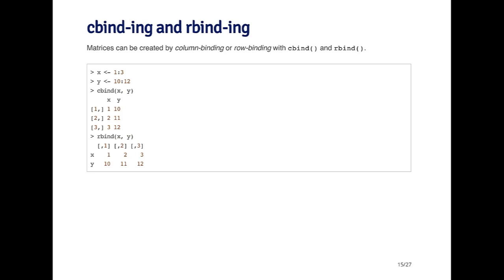Another way to create a matrix, and this is a common way, is by binding columns or binding rows. Column binding and row binding can be achieved by the functions cbind and rbind.